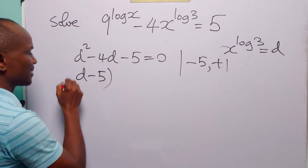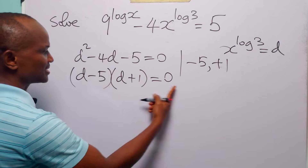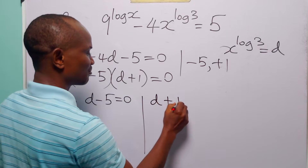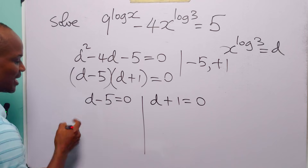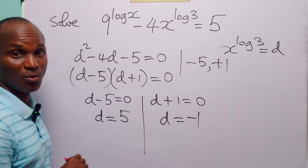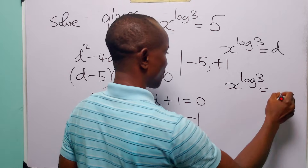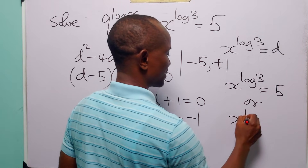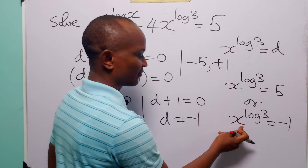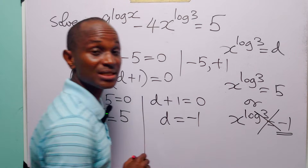So the left-hand side factors as (d minus 5)(d plus 1) equals 0. This means either d minus 5 equals 0 or d plus 1 equals 0, giving d equals 5 or d equals minus 1. This means x to the power log 3 equals 5 or x to the power log 3 equals minus 1. Since there is no real value of x that gives a negative result, the second equation is unacceptable.